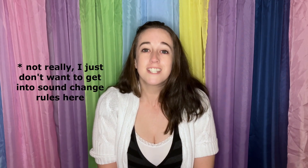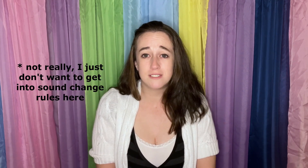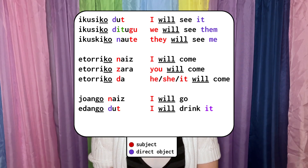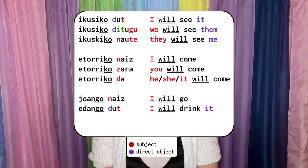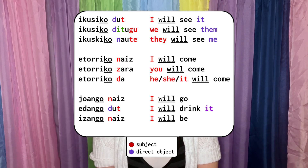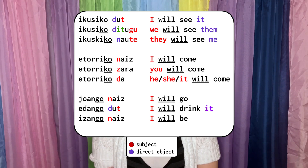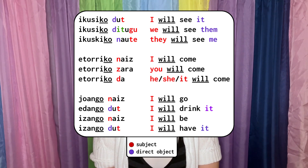If your verb ends in the letter N, you add 'go' instead of 'ko' because it sounds better. Yoango nais — I will go. E dango dut — I will drink it. E sango nais — I will be. E sango dut — I will have it.